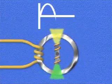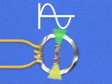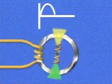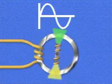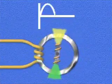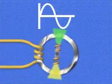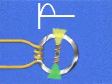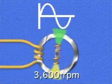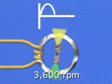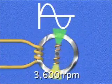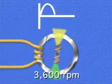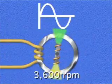In order to produce 60 hertz, a generator's rotor has to make 60 complete revolutions each second, or 3,600 revolutions per minute, abbreviated RPM.